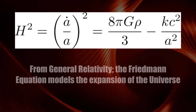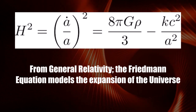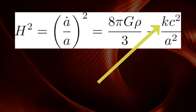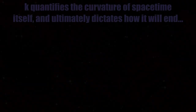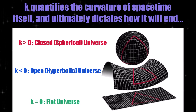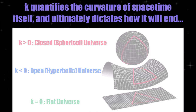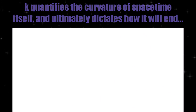Let's look at the Friedmann equation, which can be derived from general relativity as well as from classical mechanics, and it describes the expansion rate of the universe. The key term for this argument is K, the curvature. K has dimensions of reciprocal length squared, or inverse area, and quantifies whether spacetime is flat, hyperbolic, or spherical, which leads to a closed or open universe. The main point is that K describes how the universe will grow and eventually end.